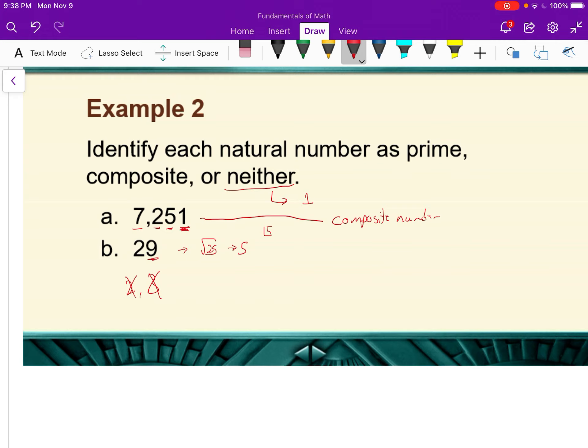We don't need to check 4 because 2 doesn't work. So we only have to check prime numbers. We don't have to check other composite numbers. 5 doesn't go into 29 because it doesn't end in 5 or 0. And we can stop checking.